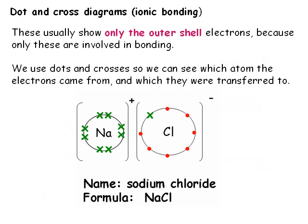Dot and cross diagrams are used to show the bonding in ionic substances. We usually show only the outer shell electrons, as these are the ones used in forming bonds. We also use dots to show the electrons that came from one atom, and crosses for the electrons from the other atom. The dot and cross diagram shows the charges on each ion, how many of each ion there is as shown in the chemical formula, and where the electrons are after the ionic bond has been formed.